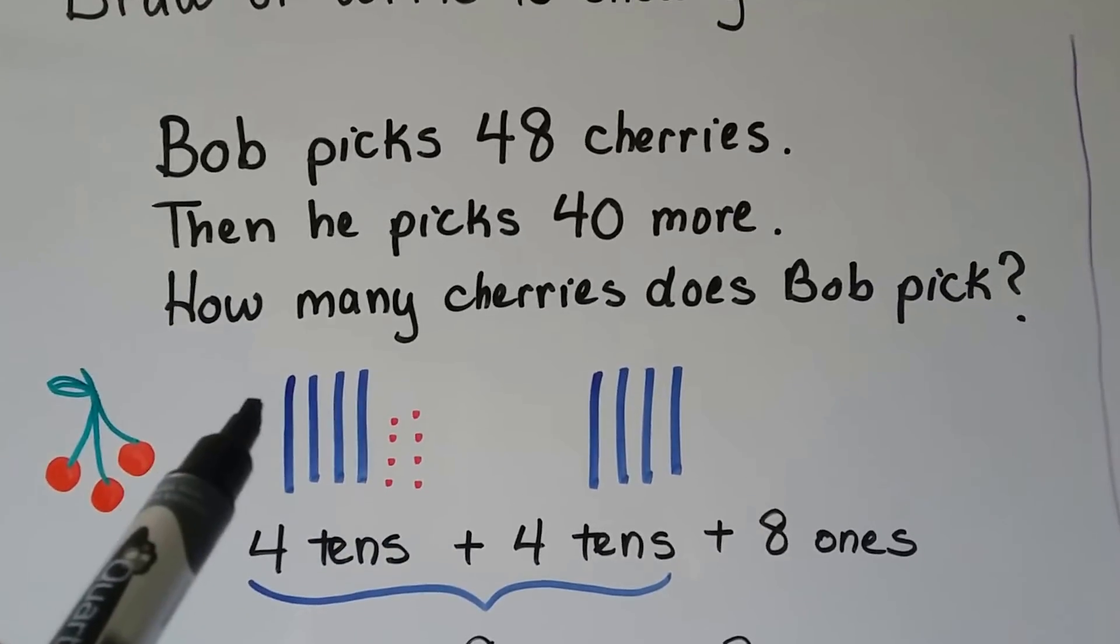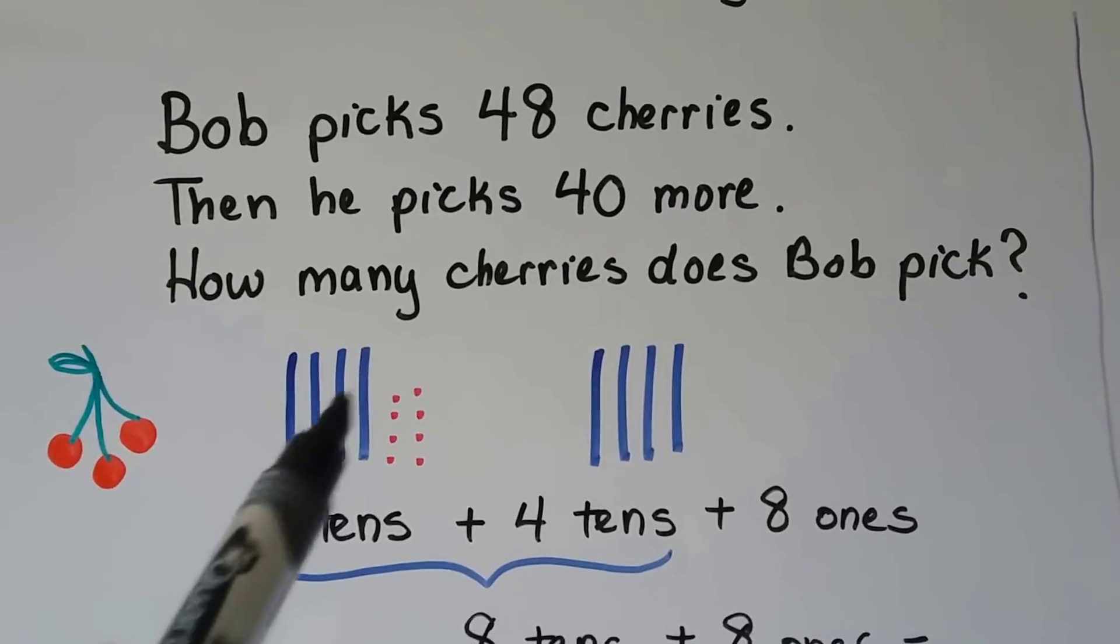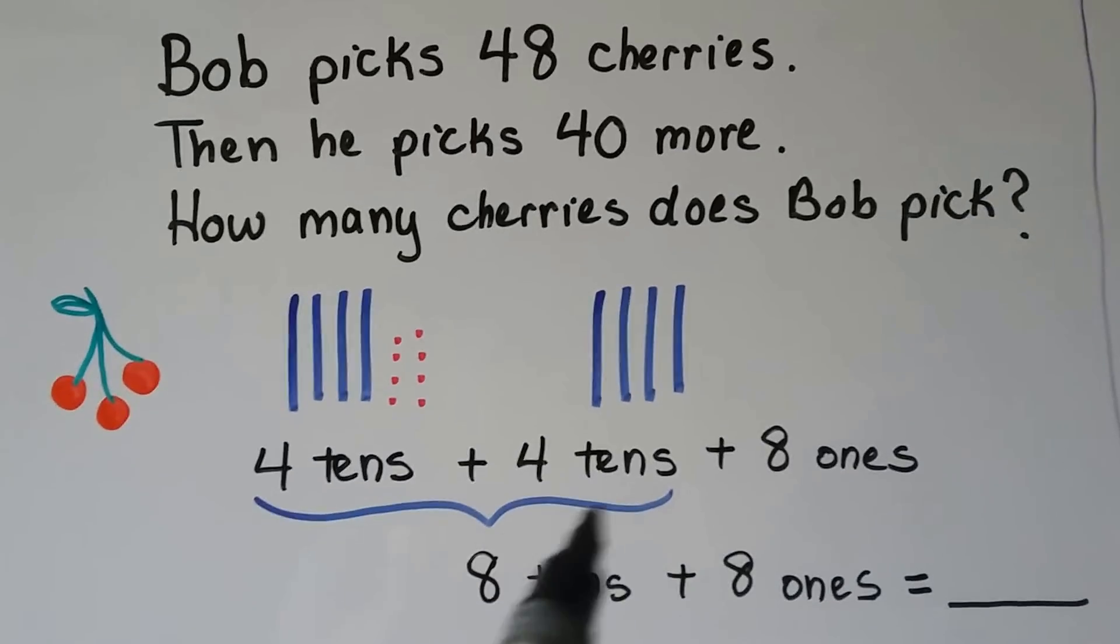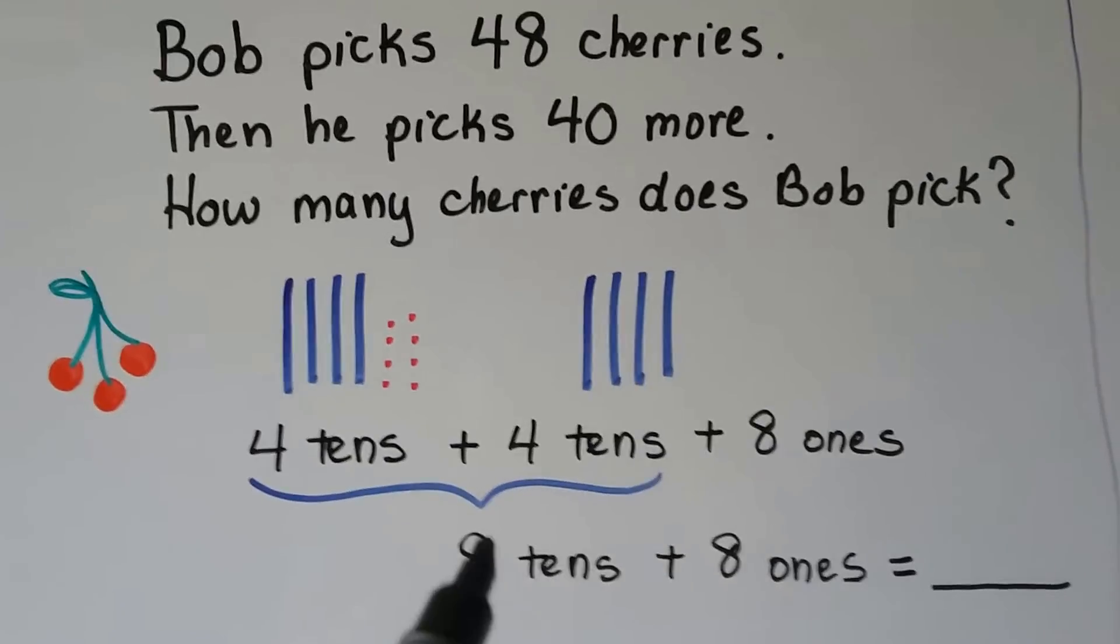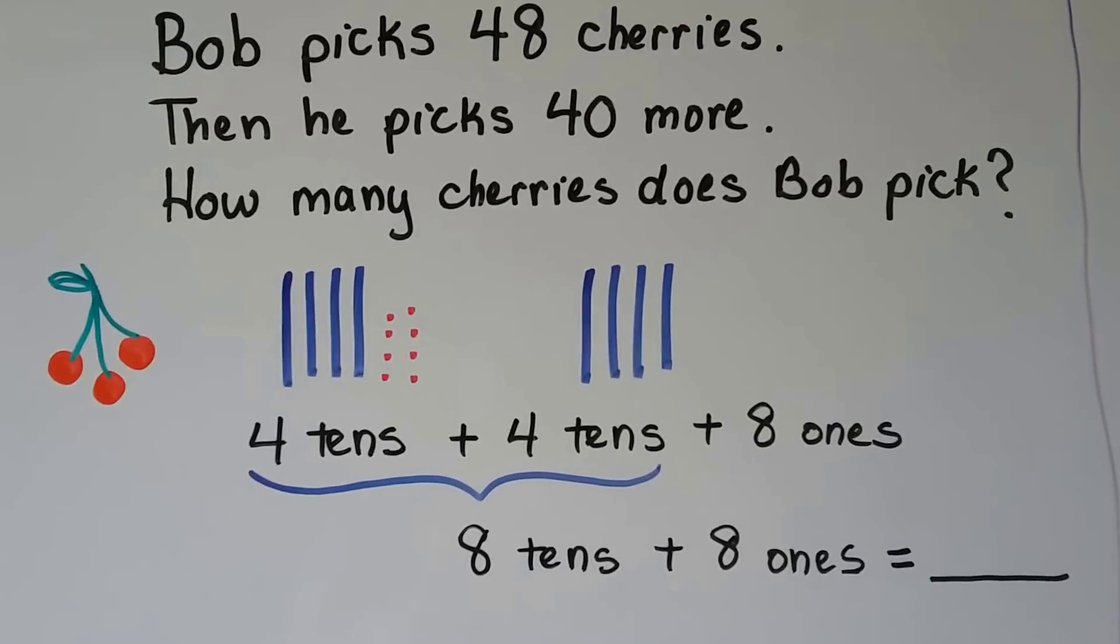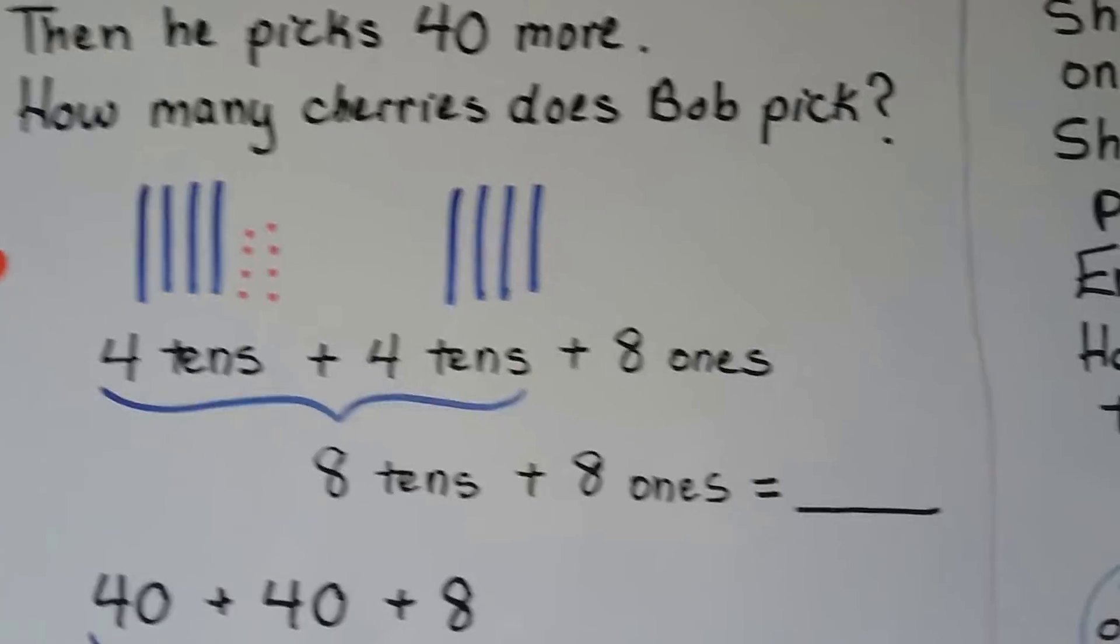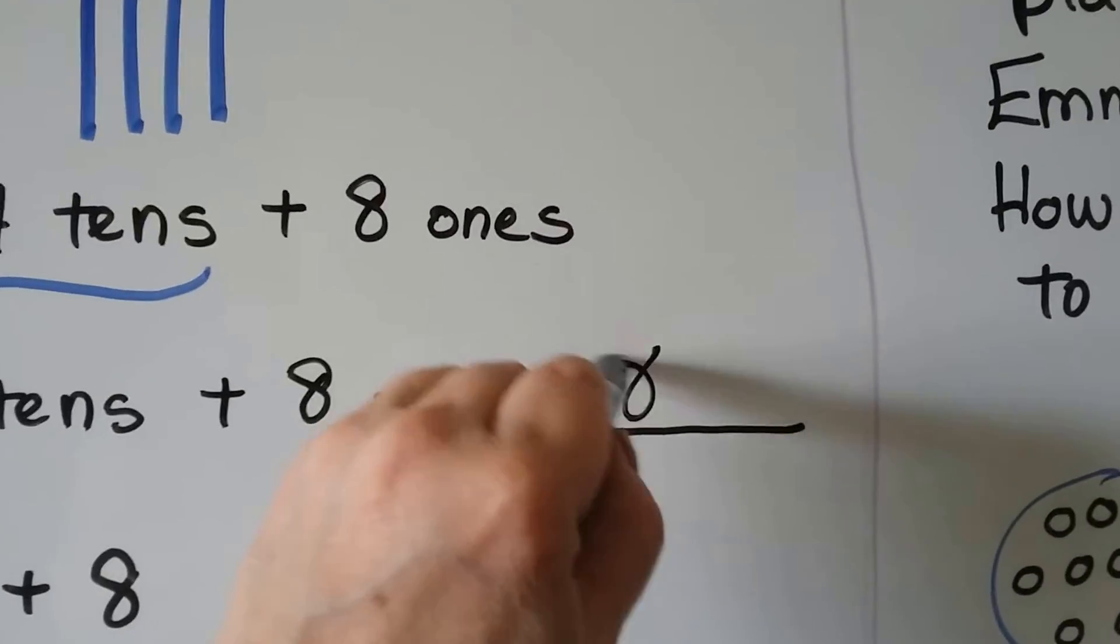We can group and add the 4 tens and the 4 tens. That will give us 8 tens. 4, 5, 6, 7, 8. Then we can add the 8 ones. 8 tens plus 8 ones is equal to 88.